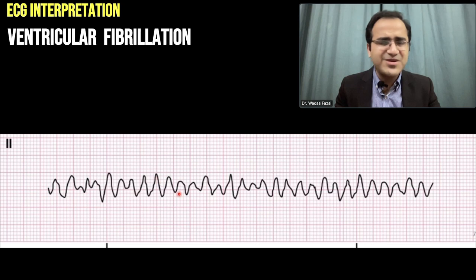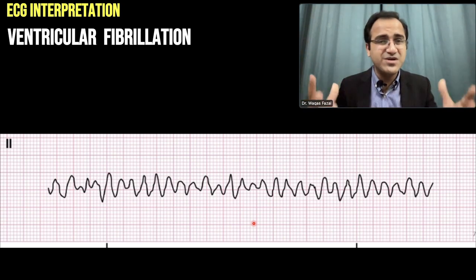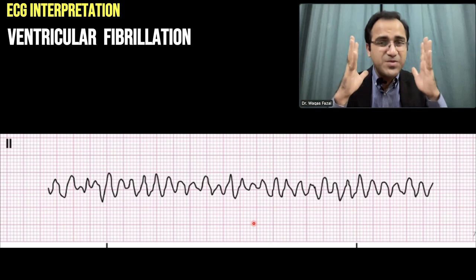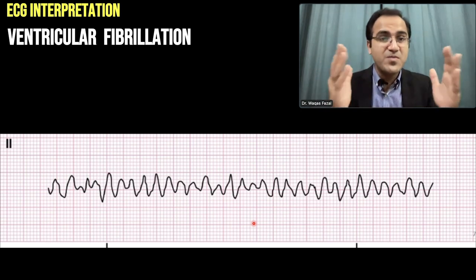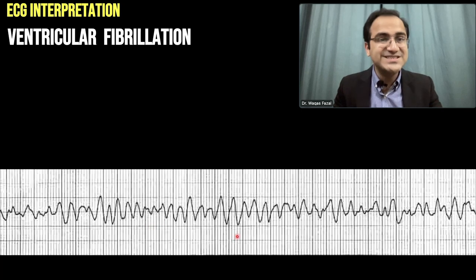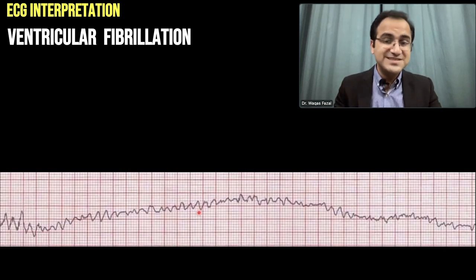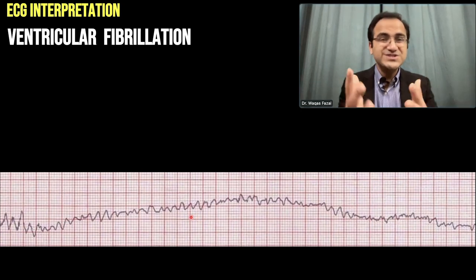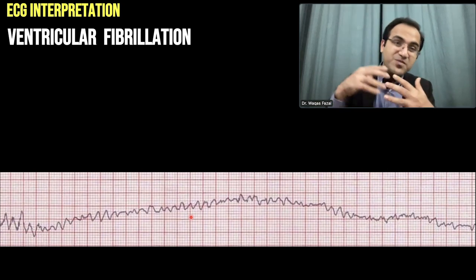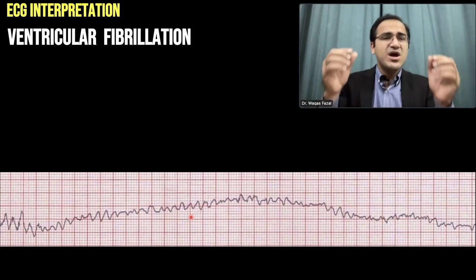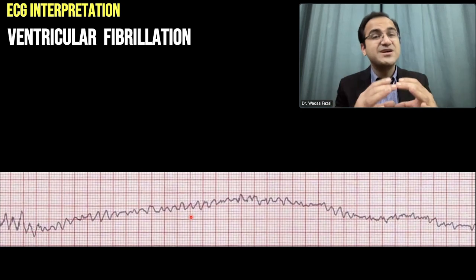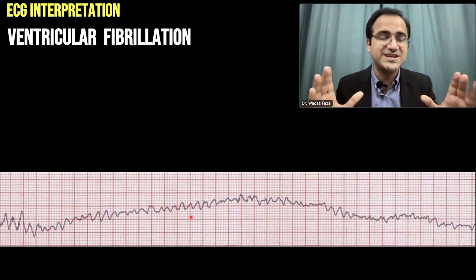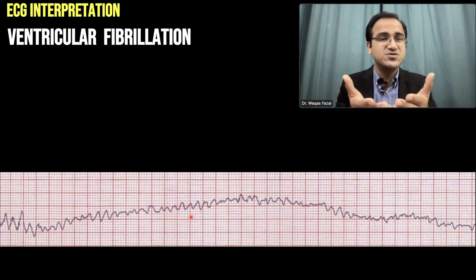This is an ECG showing chaotic rhythm — ventricular fibrillation. This ventricular rhythm makes no sense. There are no P waves, no QRS complexes. This is abnormal electrical activity because multiple foci are on fire and fighting with each other, with no proper electrical activity running in the heart. Previously discussed rhythms, even with blocks or abnormal ectopic foci, made some sense. Ventricular fibrillation is so haphazard it makes no sense at all.